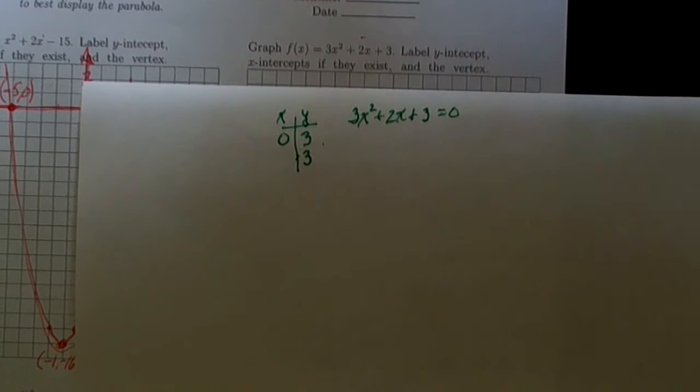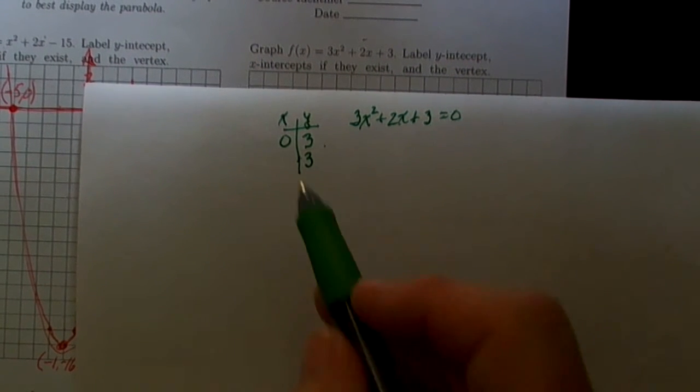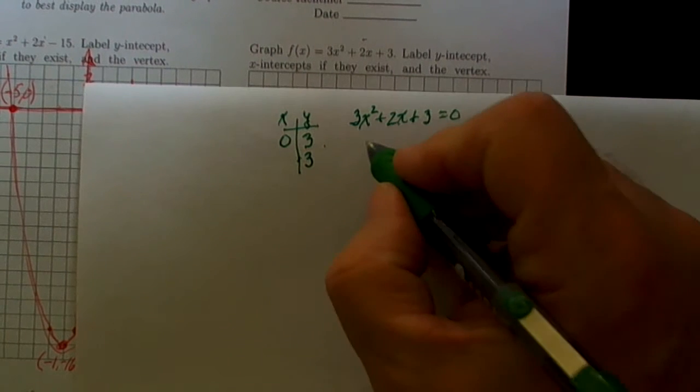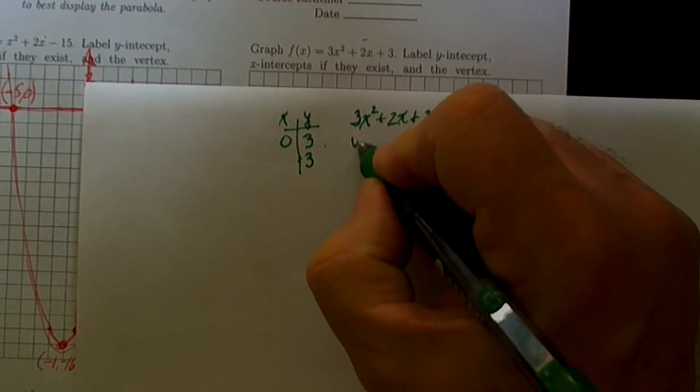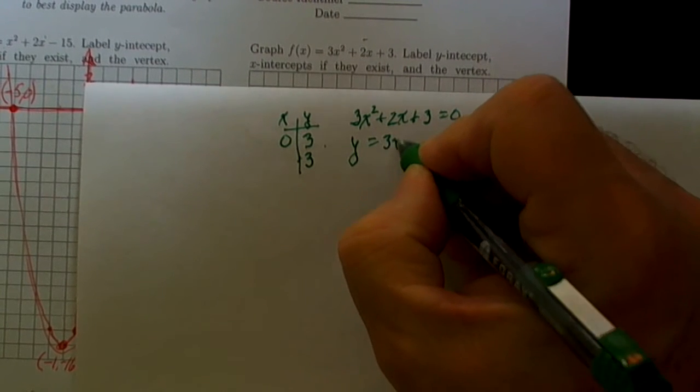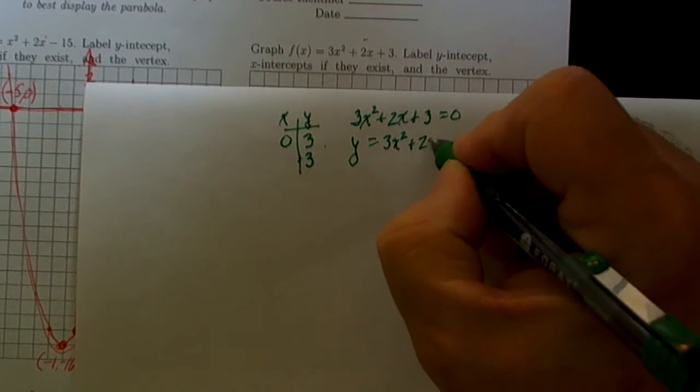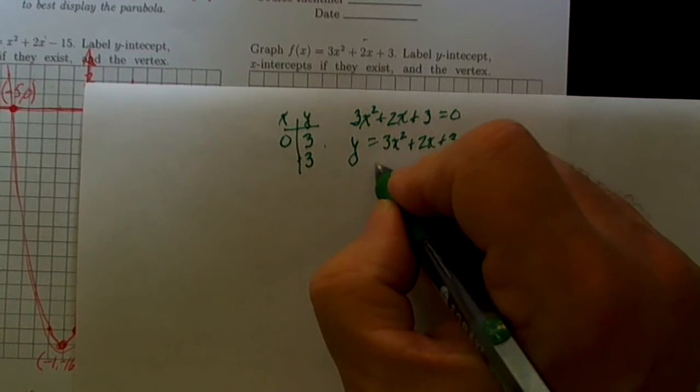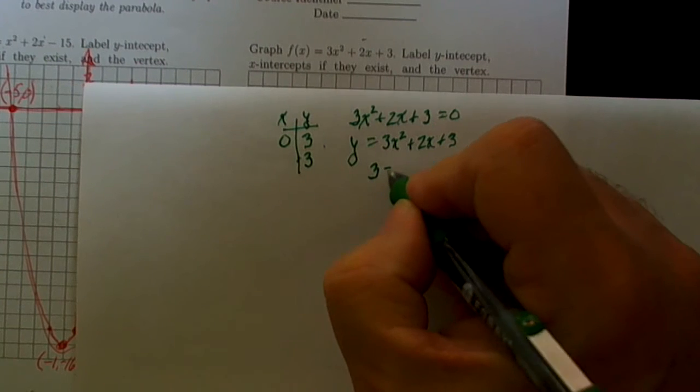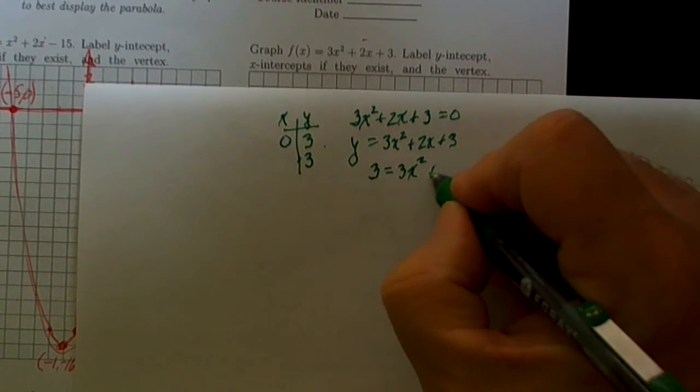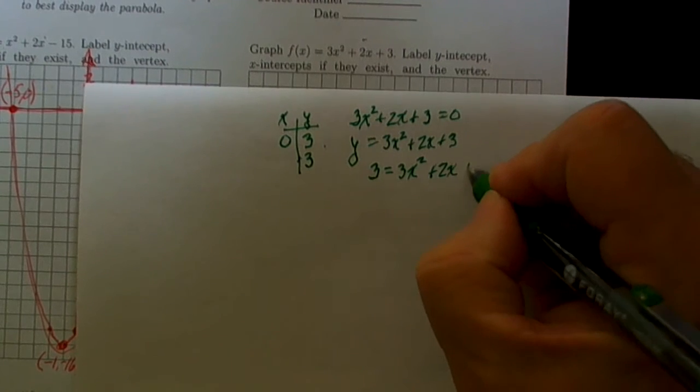If y is equal to 3 we want to find all of the x's that are at that same particular height. We've got the function y is equal to 3x² plus 2x plus 3. If y is 3 that equation becomes 3 is equal to 3x² plus 2x plus 3.